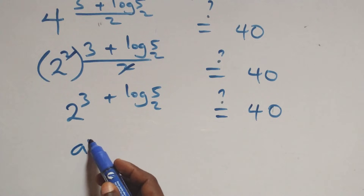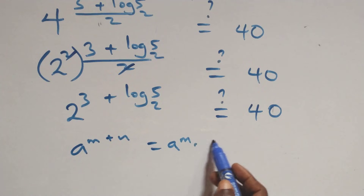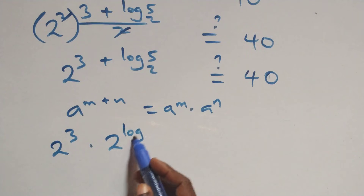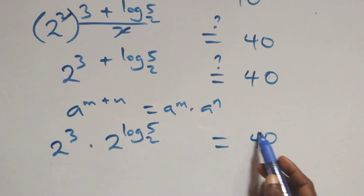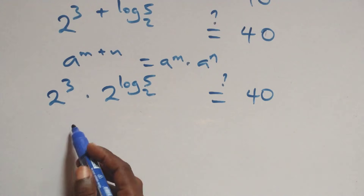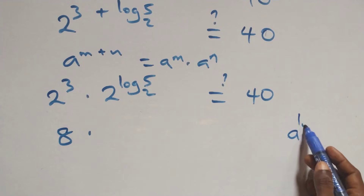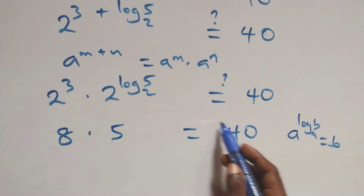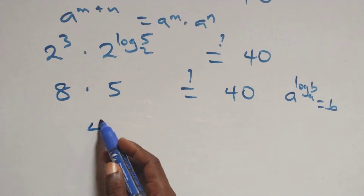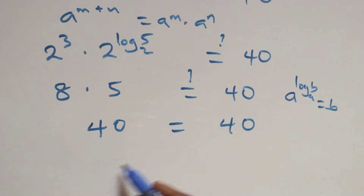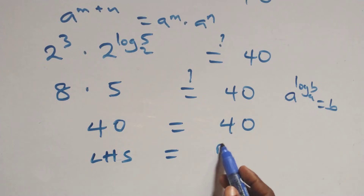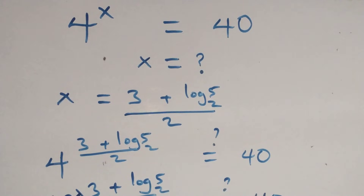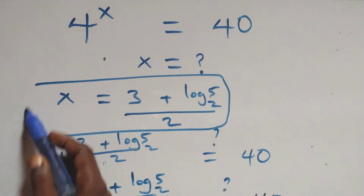Then here it follows: x raised to the power (m plus n) is the same thing as x raised to the power m times x raised to the power n. Here we have 2 raised to the power 3 times 2 raised to the power log 5 base 2 equals to 40. And 2 raised to the power log 5 base 2 equals 5. We conclude here that x equals to (3 plus log 5 base 2) all over 2 satisfies this given problem.